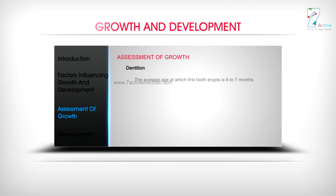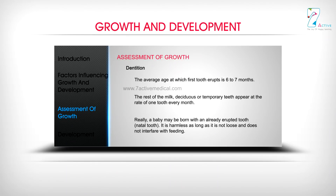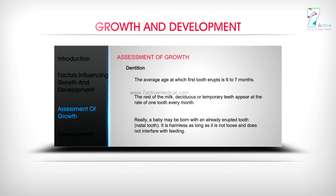Dentition: The average age at which the first tooth erupts is 6–7 months. The rest of the milk, deciduous or temporary teeth, appear at the rate of one tooth every month. Rarely, a baby may be born with an already erupted tooth — a natal tooth — which is harmless as long as it is not loose and does not interfere with feeding.